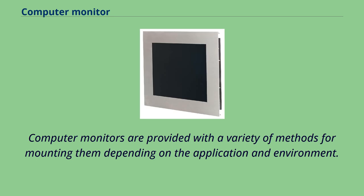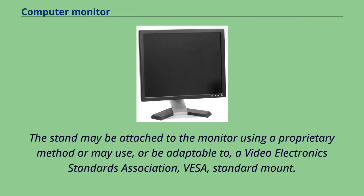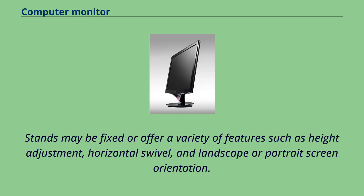Computer monitors are provided with a variety of methods for mounting them depending on the application and environment. A desktop monitor is typically provided with a stand from the manufacturer which lifts the monitor to a more ergonomic viewing height. The stand may be attached to the monitor using a proprietary method or may use a Video Electronic Standards Association (VESA) standard mount. Using a VESA standard mount allows the monitor to be used with an aftermarket stand once the original stand is removed. Stands may be fixed or offer a variety of features such as height adjustment, horizontal swivel and landscape or portrait screen orientation.